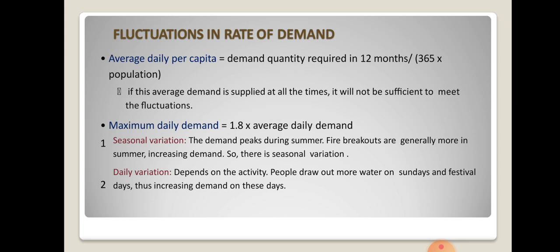Seasonal variation occurs because during peak summers there may be increased chances of fire breakouts and more water consumption, leading to higher demand. Daily variation refers to day-to-day variation based on daily activities — especially on holidays or festival days, the demand for water will be more, causing fluctuations in the rate of demand.